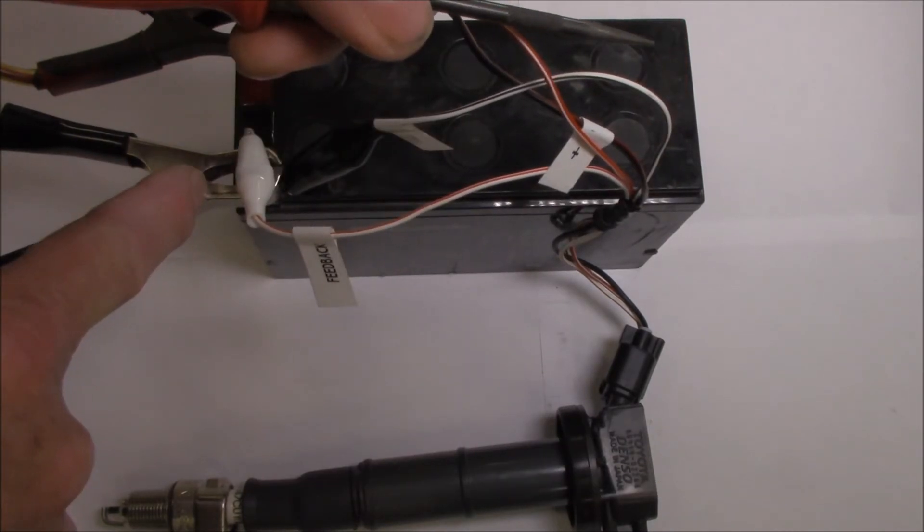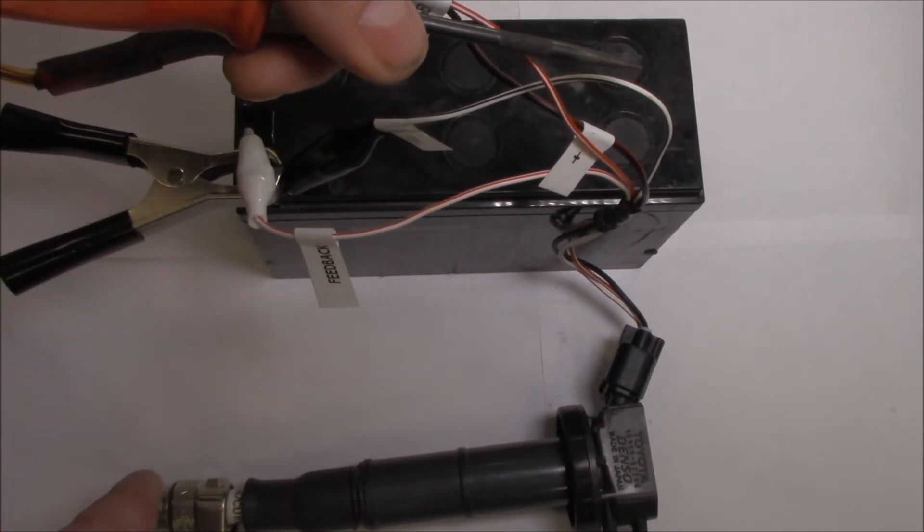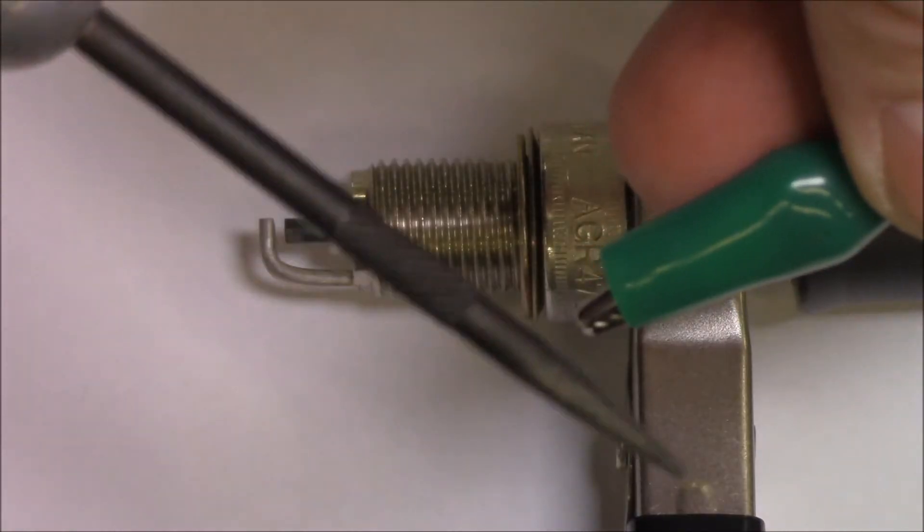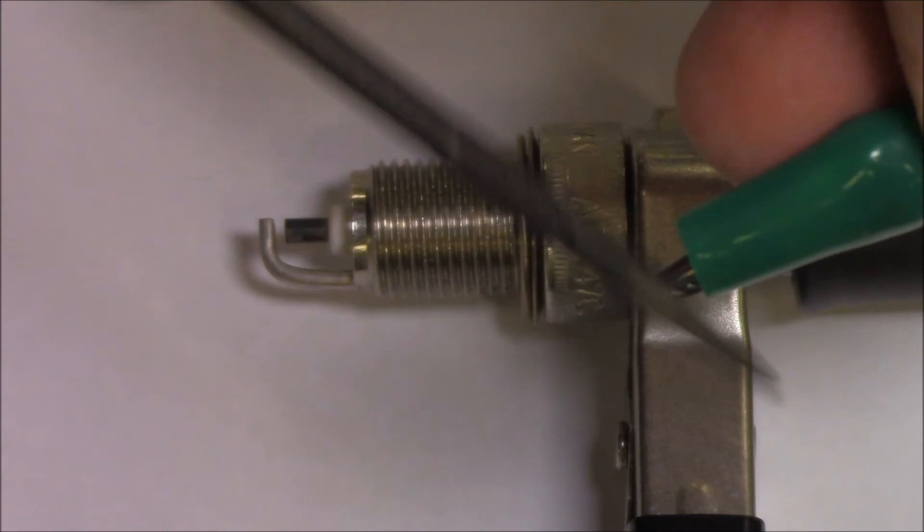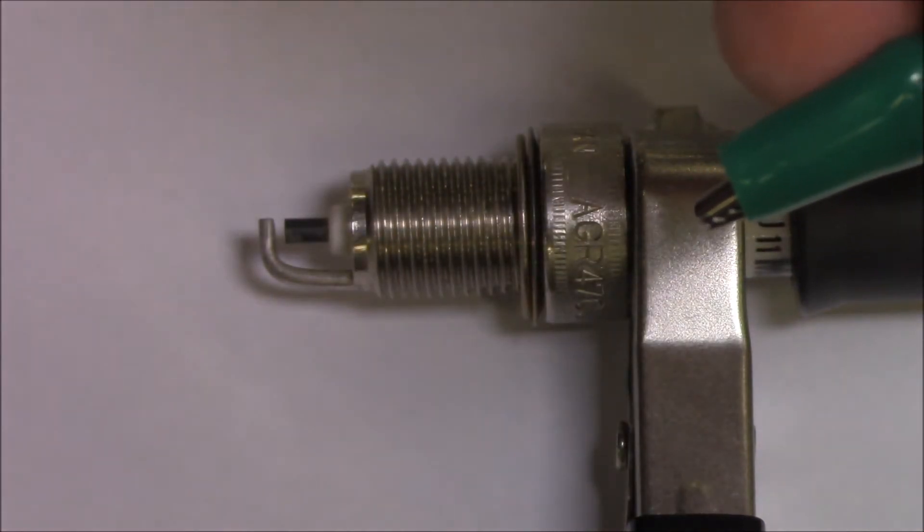Don't forget that you need an earth wire going onto the test spark plug that you've got on the coil. Just on my trigger wire, you can see that this coil is firing.